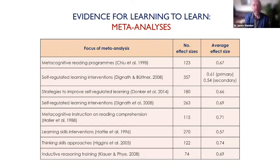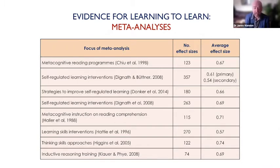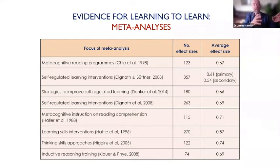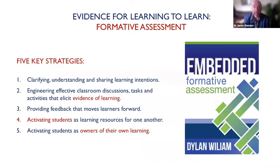What does the evidence actually show? The research underpinning the EEF claim is mainly focused on meta-analyses - studies of studies - looking at very large collections of metacognition and self-regulation intervention studies. The average effect size across these studies is around 0.5 to 0.7, which is large as effect sizes go. To put that in context: a school where 50 percent of kids were getting five A* to C grades - an effect size of 0.5 to 0.7 would translate to about 75 percent, so a school going up by 25 percent in one year.